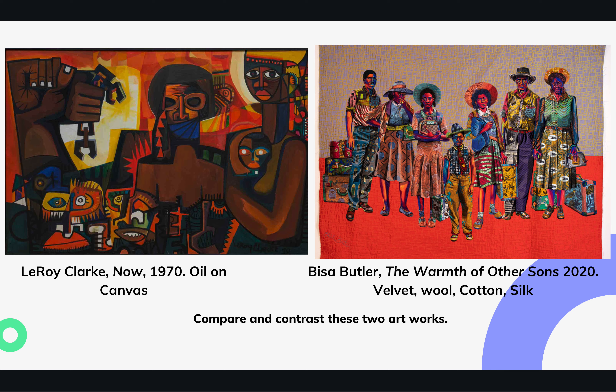Bisa Butler uses decorative textiles and the patterns on the clothing her figures wear, and even on their flesh, to create a more realistic picture, while Leroy Clark abstracts things and uses more closed geometric shapes — harder shapes — for his picture. What symbols and forms would you use to describe your own family?